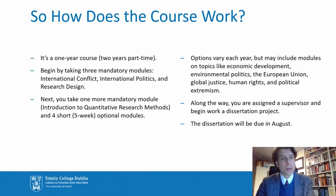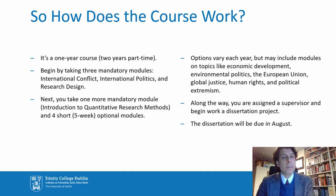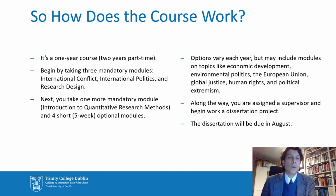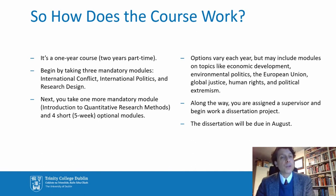So let's talk about how the course works. It's a one-year course if you take it full-time, two years if part-time. You begin by taking three mandatory modules: a module on international conflict, a module on international politics more generally — the nuts and bolts of the field — and a critically important course on research design, where we teach you how to come up with a political science problem, solve it, and figure out what tools you're going to need. That covers the first term of your study with us.